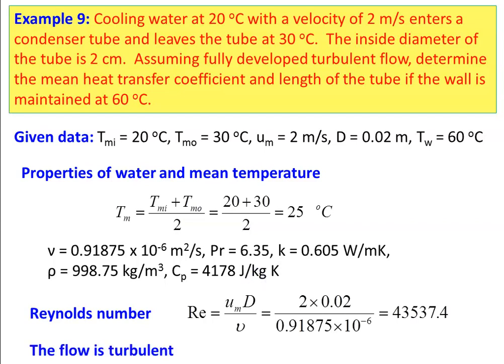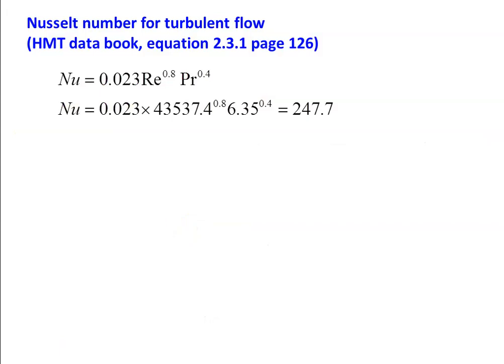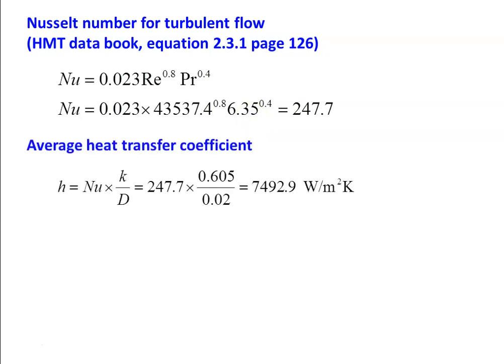For turbulent flow, from data book page 126, equation 2.3.1, for heating of the fluid: Nu = 0.023 × Re^0.8 × Pr^0.4 = 0.023 × (43537.4)^0.8 × (6.35)^0.4 = 247.7. The average heat transfer coefficient: h = Nu × k/D = 247.7 × 0.605 / 0.02 = 7492.9 W/m²·K.